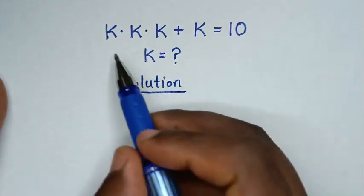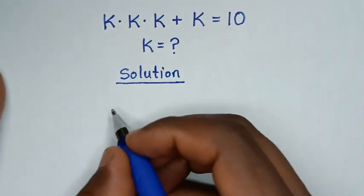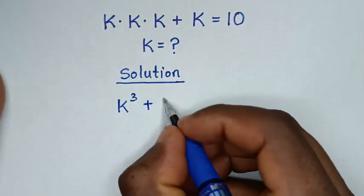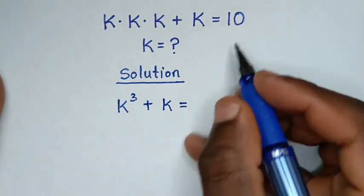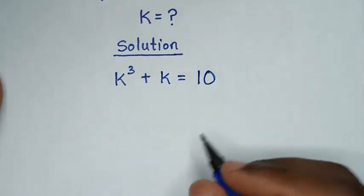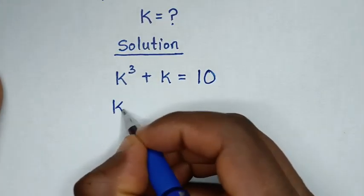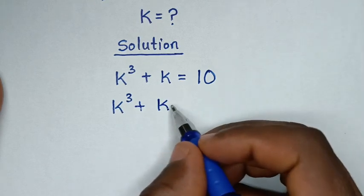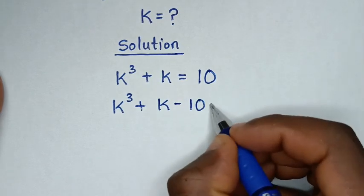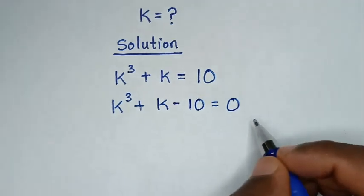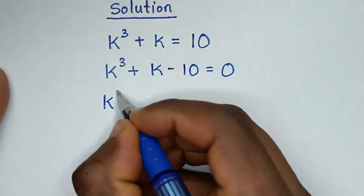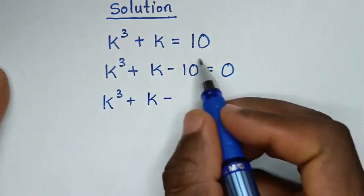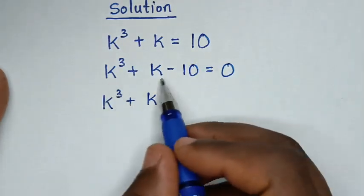From our problem here, k times k times k is k power 3, then plus k is equal to 10. In the next step, it will be k power 3 plus k — we take 10 to the left side — so minus 10 is equal to 0. It will be k power 3 plus k minus 10, and we split according to the exponents.